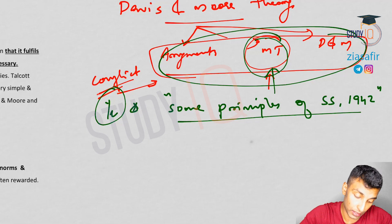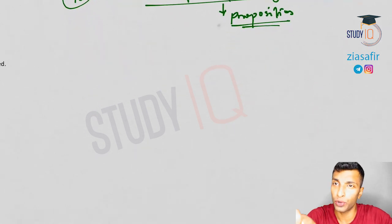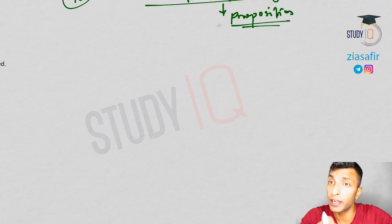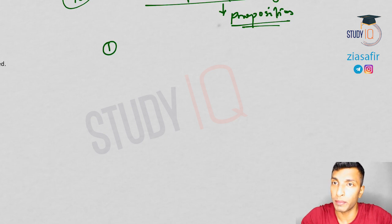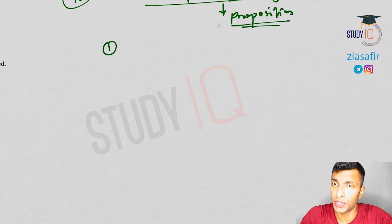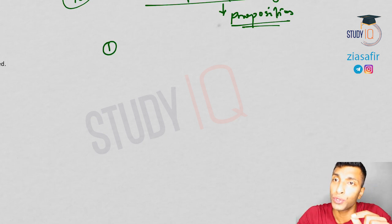Now let's start with the propositions. First, what Davis and Moore are saying is that society is made up of certain positions. No problem with that. Society has certain positions and some of which are functionally more important. For example, talking about chief secretary position and a collector position — these are different positions and some are more important. Chief secretary is more important; similarly DGP is more important than a superintendent of police. So some positions are functionally more important, and that itself shows you a stratified society.